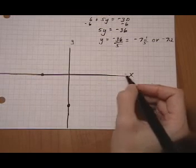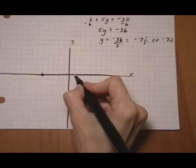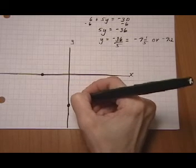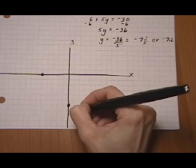And then we have x is one, over one, and then down 7.2. One, two, three, four, five, six, seven, somewhere around there.